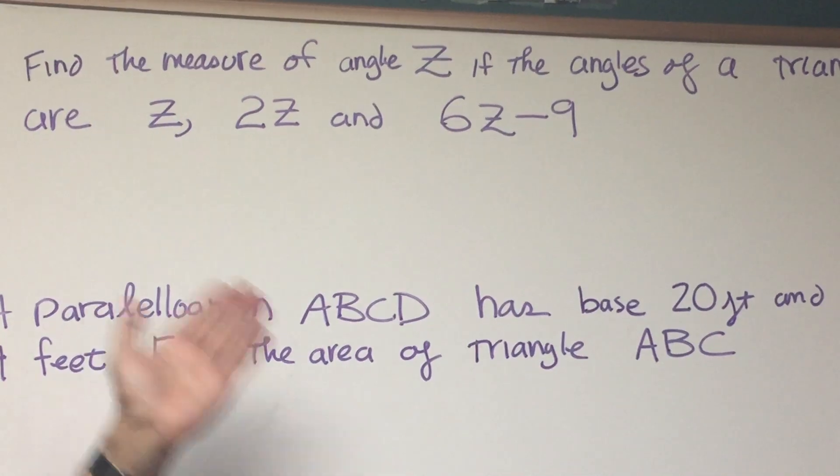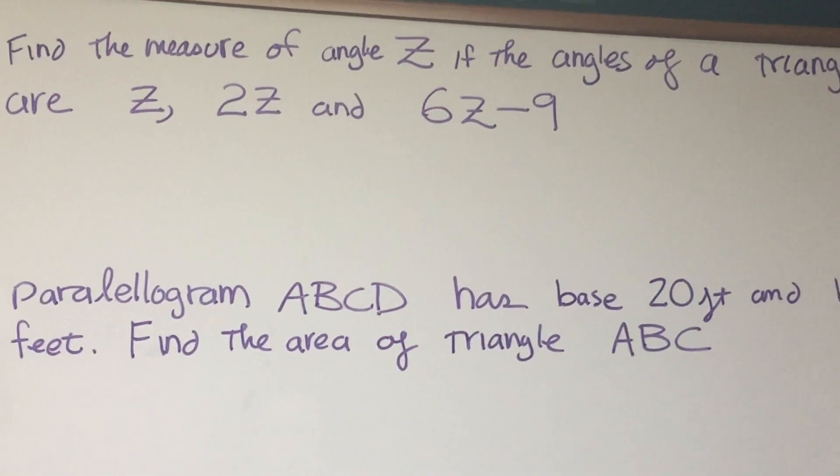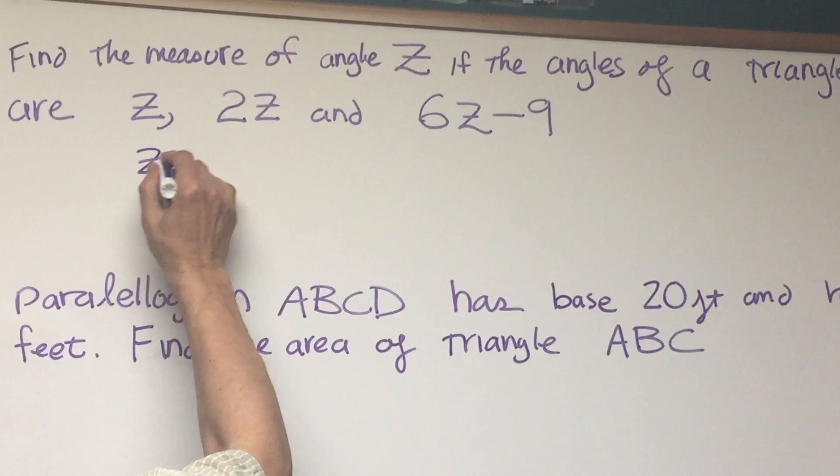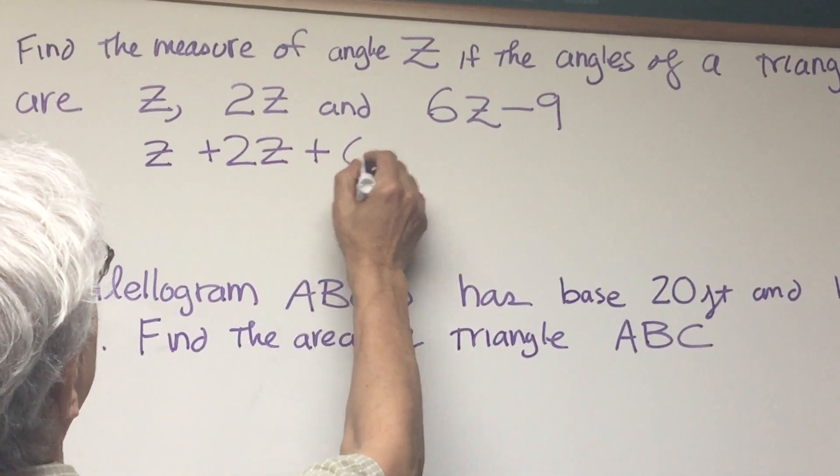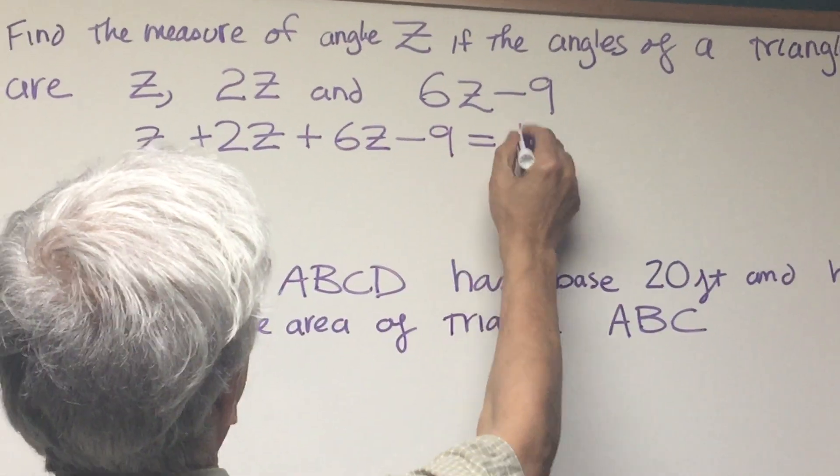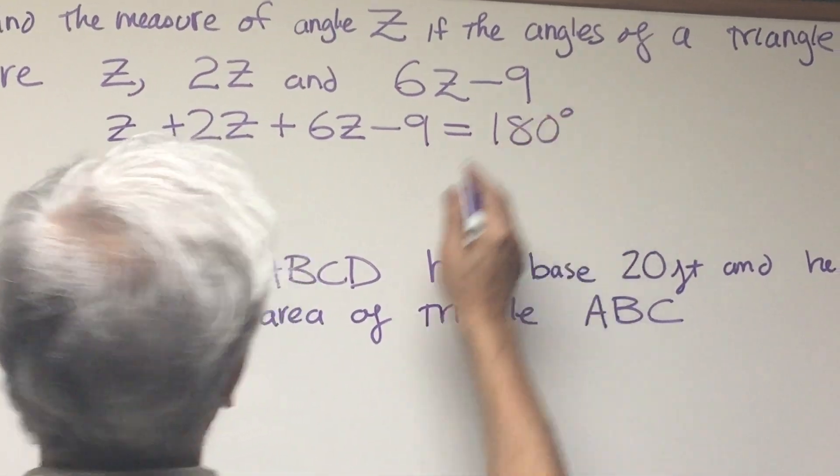Well, very simply, the sum of the angles of a triangle is equal to 180 degrees, so we want Z. If we add Z plus 2Z plus 6Z minus 9, that all adds up to 180 degrees.